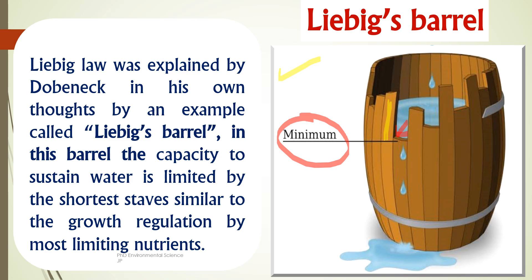If the nutrient in lowest supply is reduced further, growth will be hampered. Adding more of the other nutrients will not increase growth until the limiting nutrient is increased. In summary, Liebig's barrel illustrates that an organism's growth is constrained by the most limited resource. To enhance growth, the limiting nutrient must be addressed first.